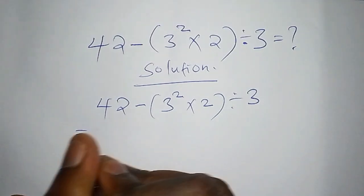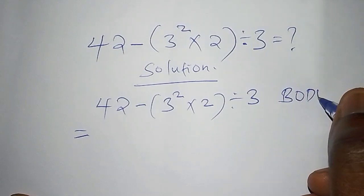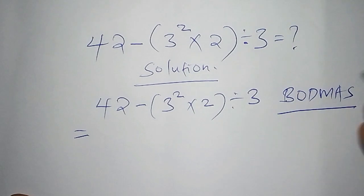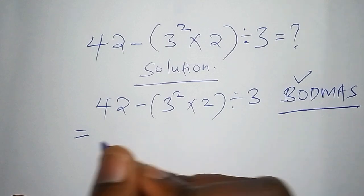Before we work out the first step, this is something that we want to introduce. It is called the BODMAS. What is BODMAS in full? It stands for the bracket. B stands for the bracket. So we are working out the bracket first. 3 squared multiply by 2.